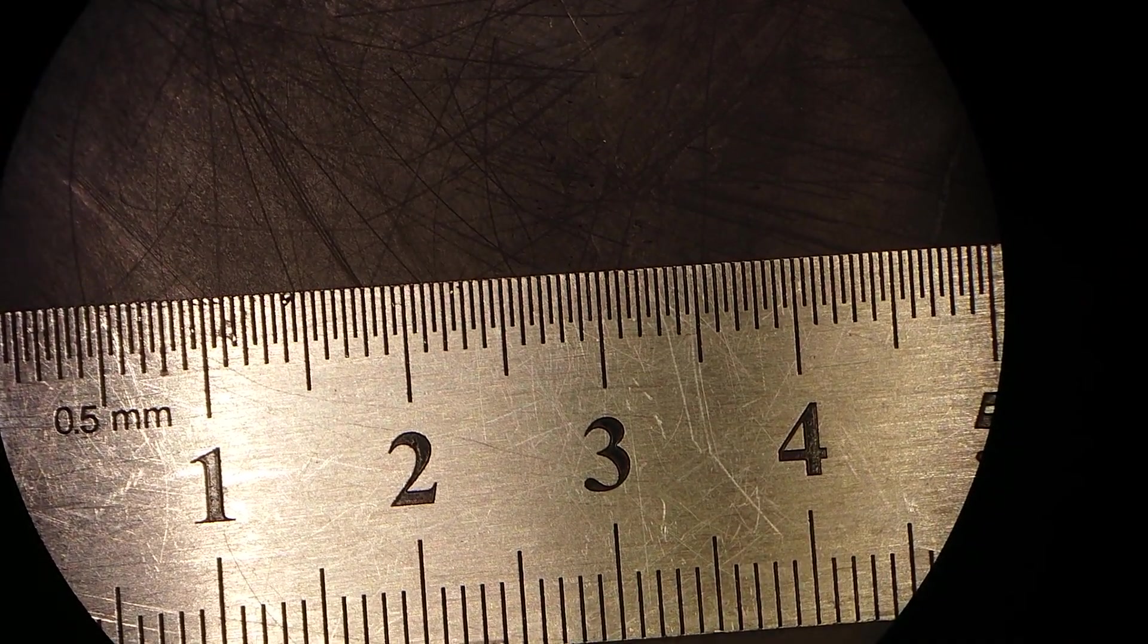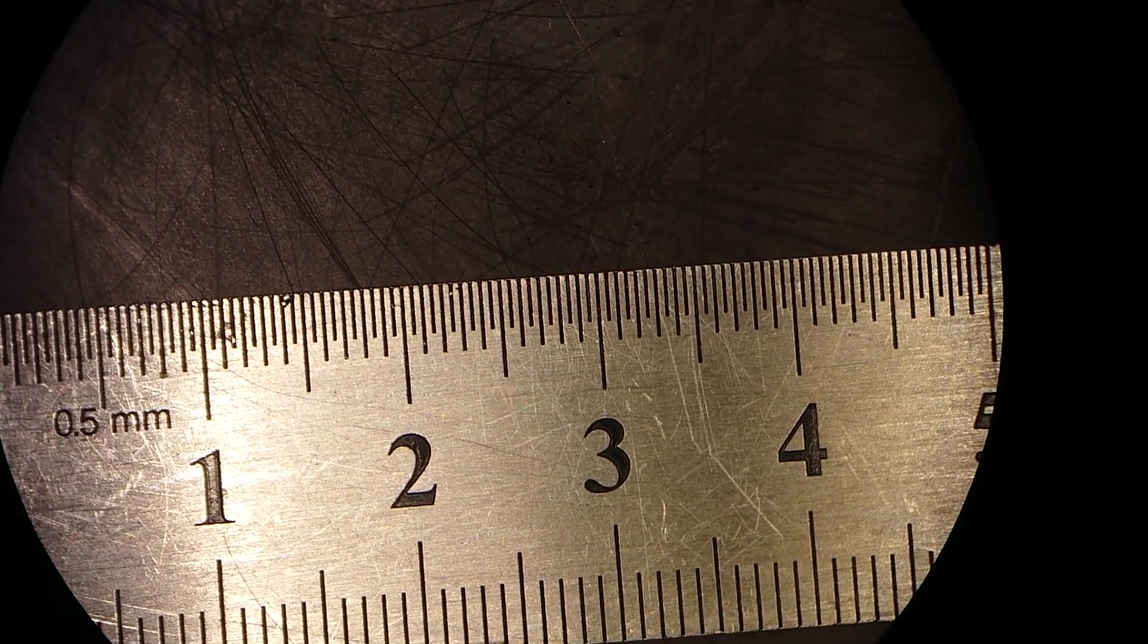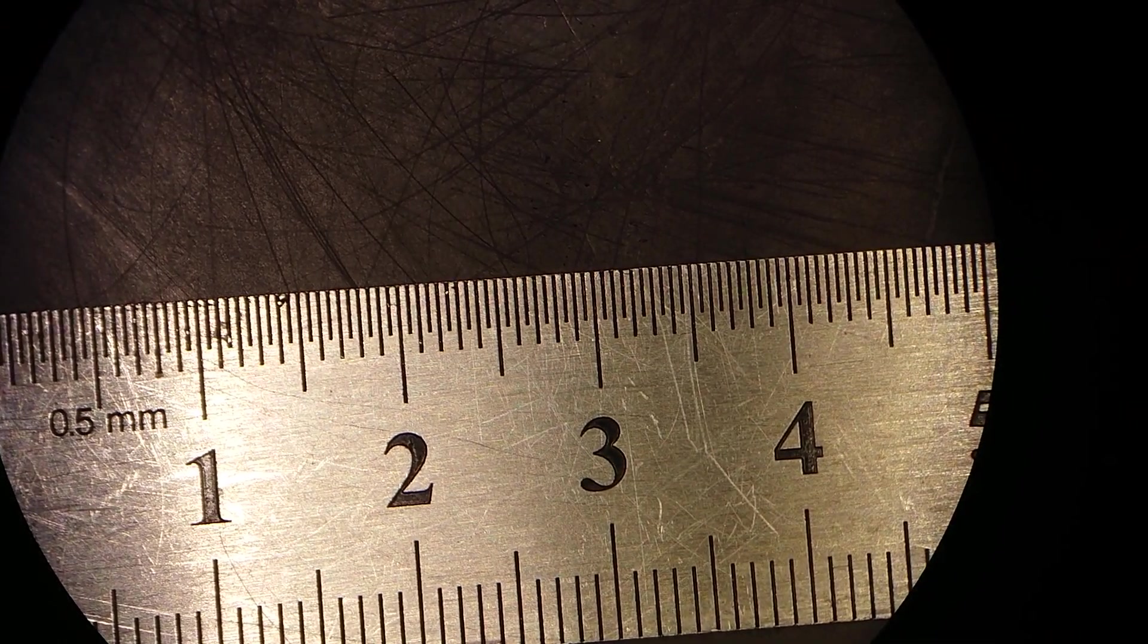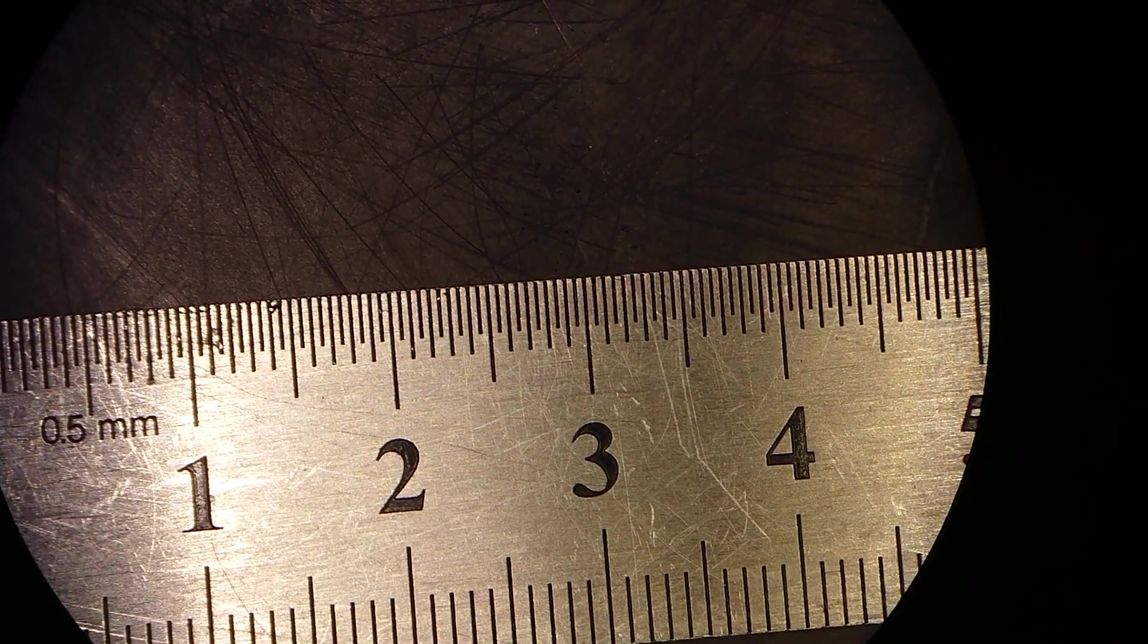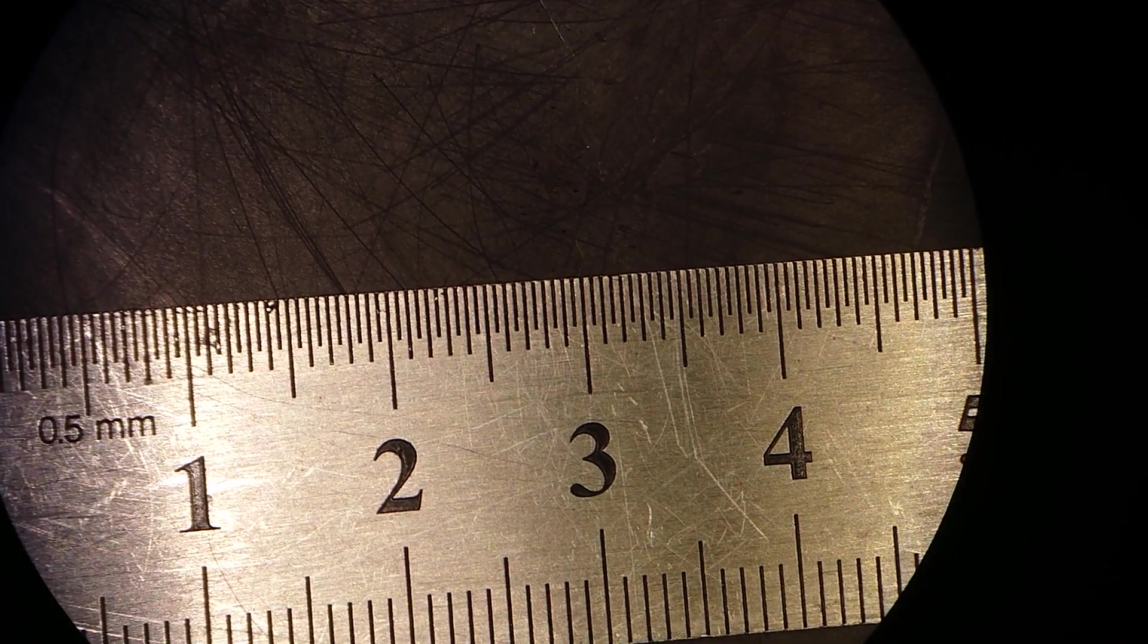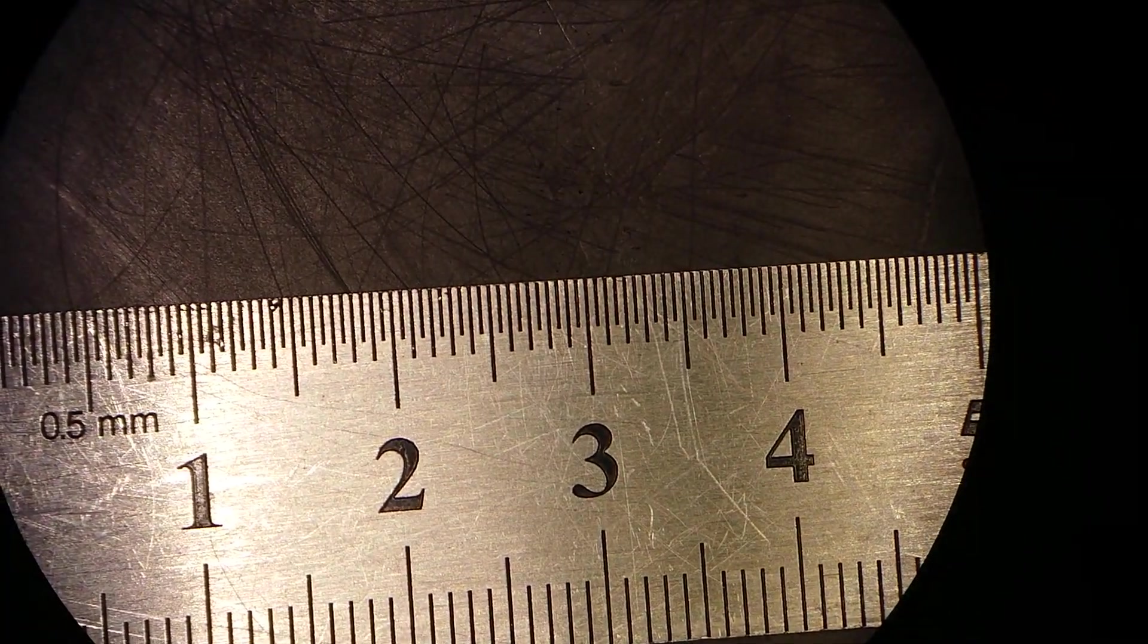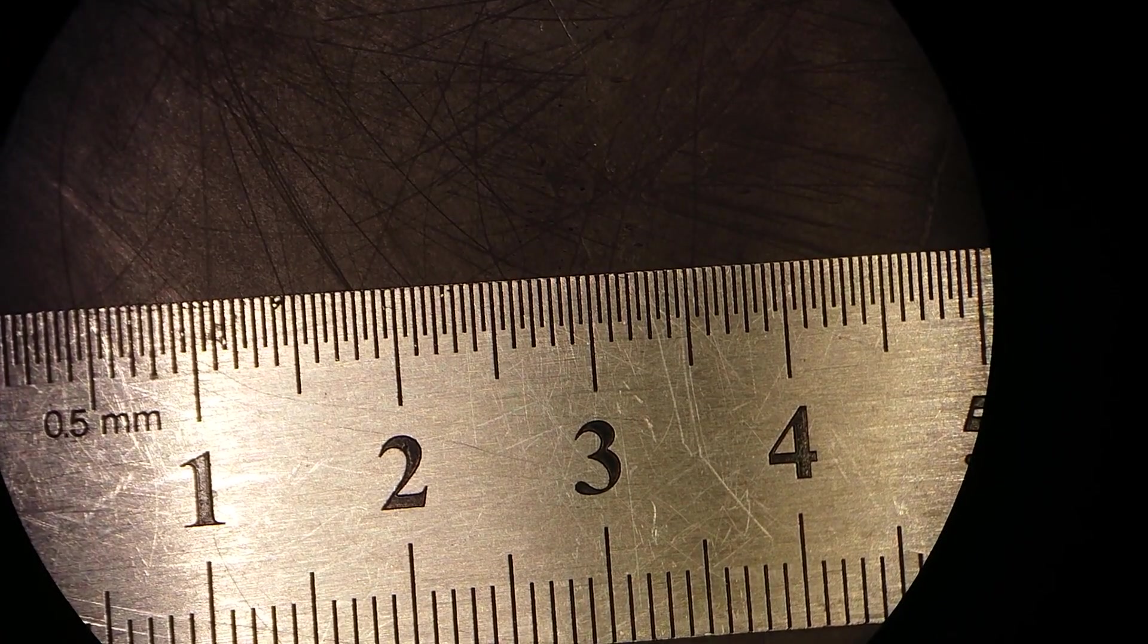Why is that? Because we have our 22 millimeters of eyepieces and we have 0.5 objective. So technically we have to have 44 millimeters, but for some reason you have 50 millimeters.